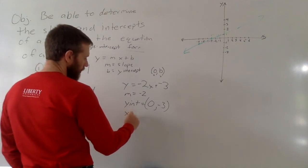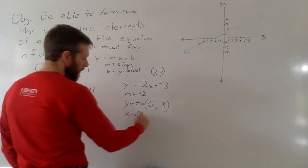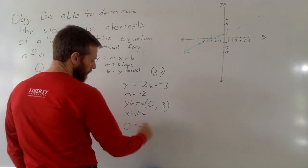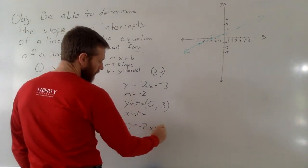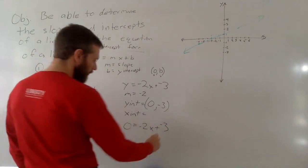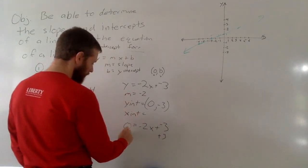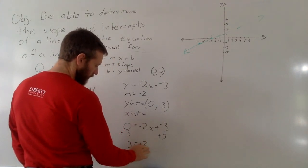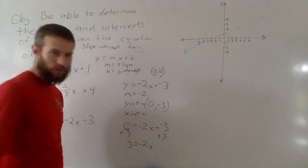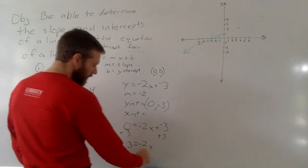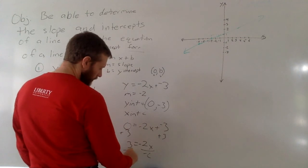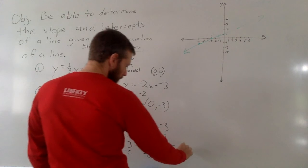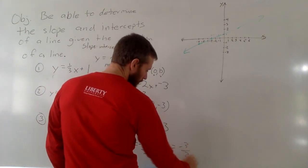To find the x-intercept, all we'll do is make y equals 0. 0 equals negative 2x plus negative 3. I'm going to add 3 to both sides. I get 3 equals negative 2x, and then I'm going to divide both sides by negative 2. So in this case, x equals negative 3/2.